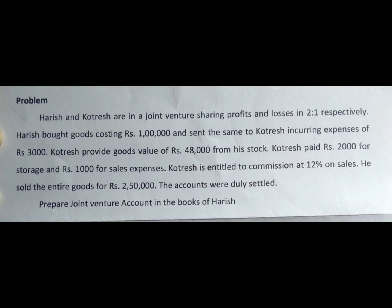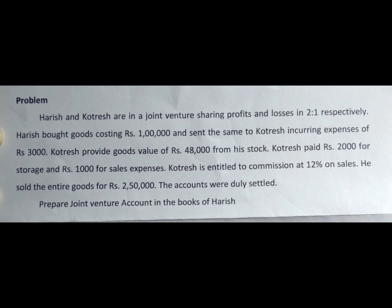Harish and Kotresh are in a joint venture sharing profits and losses in the ratio of 2 is to 1 respectively. Harish bought goods costing Rs. 1 lakh and sent the same to Kotresh, incurring expenses of Rs. 3,000. Kotresh provided goods valued at Rs. 48,000 from his stock. Kotresh paid Rs. 2,000 for storage and Rs. 1,000 for sales expenses. Kotresh is entitled to commission at 12% on sales. He sold the entire goods for Rs. 2,50,000. The accounts were duly settled.